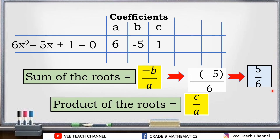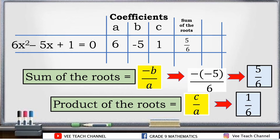For the product of the roots, we use the formula c over a. Our c is 1 and our a is 6, so the product of the roots is 1 over 6.